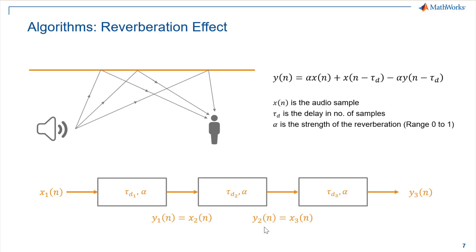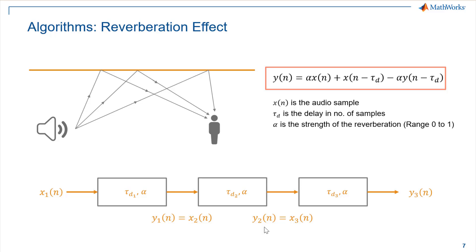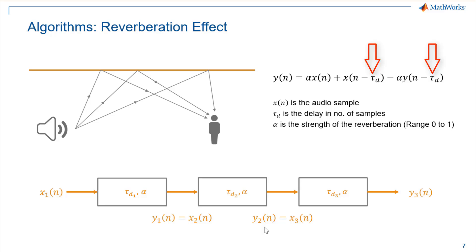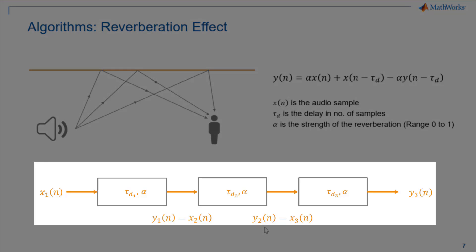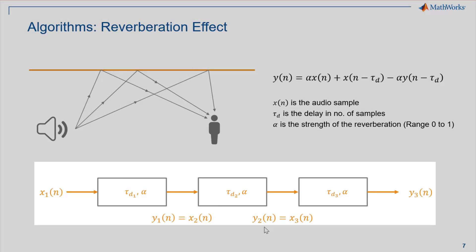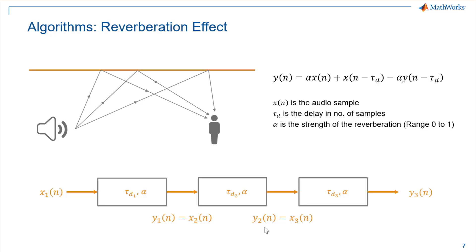Let's take a look at the reverberation effect, also known as the reverb effect. This effect is a persistence of sound after the sound has been produced, created by multiple reflections which eventually decay as the sound is absorbed by different objects. The output equation depends on the past audio input samples as well as the past audio output samples to model the reflection and decay phenomenon respectively. The parameter alpha controls the strength of the effect and tau D is the number of delayed samples. In order to model multiple reflections and decays, the output equation has been implemented with three different tau D values in a cascade fashion.